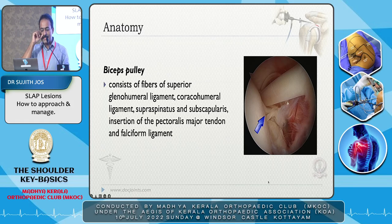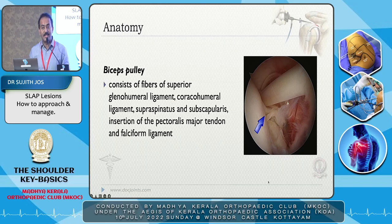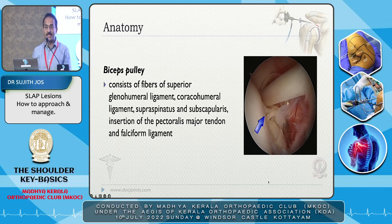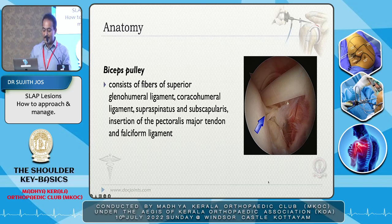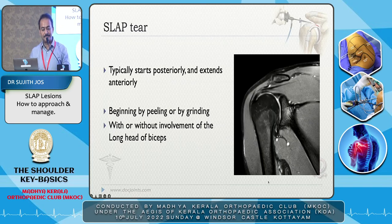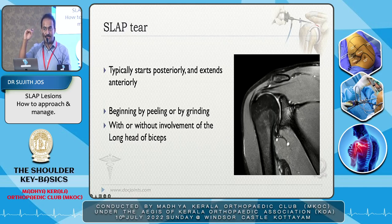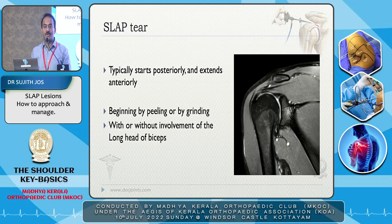What is the biceps pulley? It is a thickening of tissues formed by the superior glenohumeral ligament, the coracohumeral ligament, the supraspinatus and the subscapularis, and the insertion of the pectoralis major tendon and the falciform ligament — that is where the biceps curves down. A SLAP tear occurs in this triangle region, which normally should be attached to the superior part of the glenoid. It begins by peeling or grinding and may or may not have involvement of the long head of biceps.